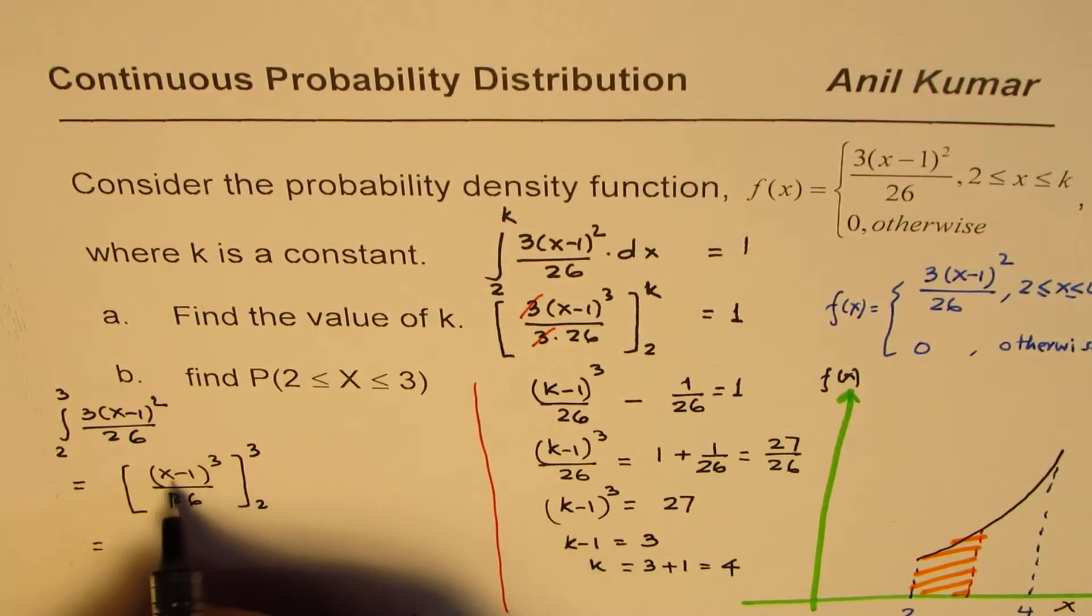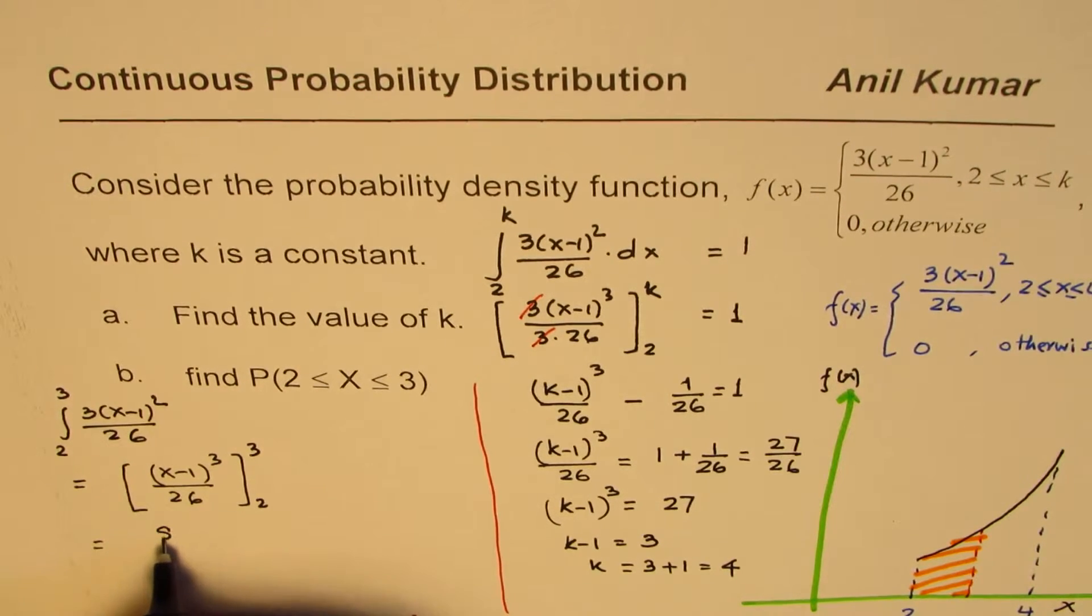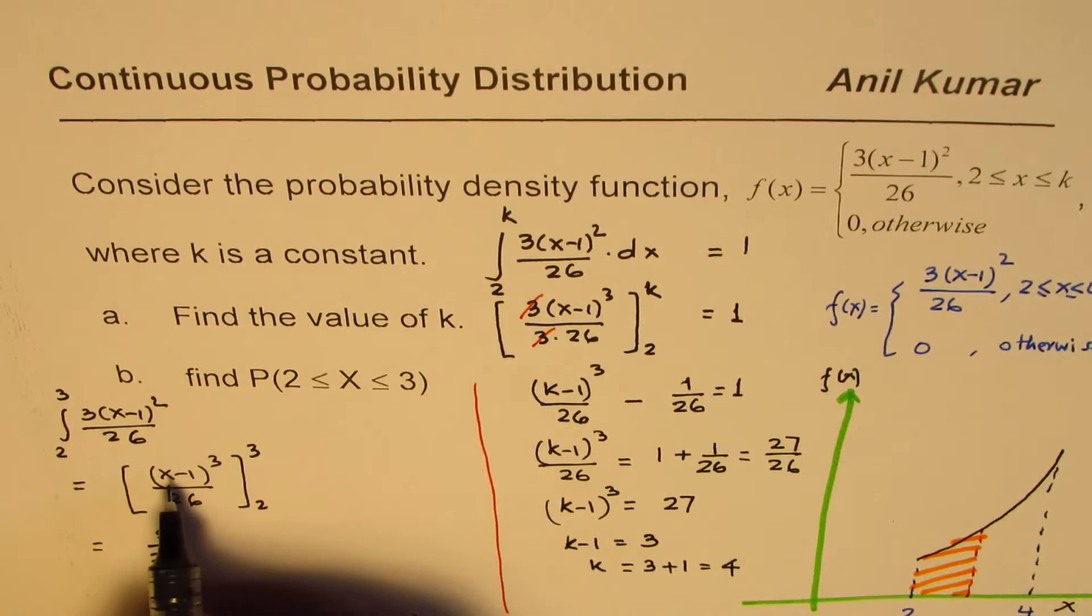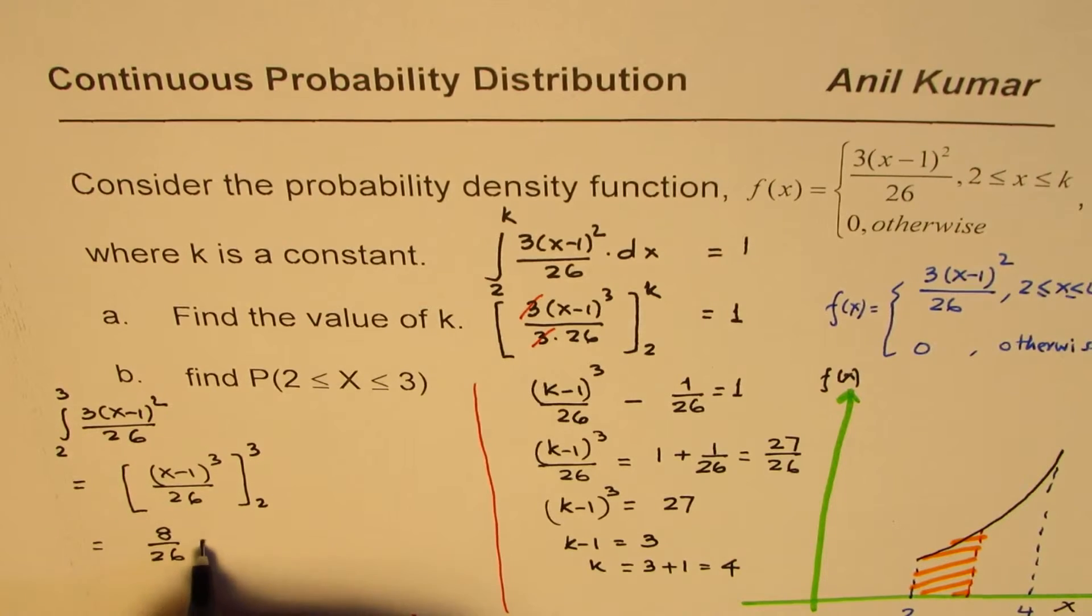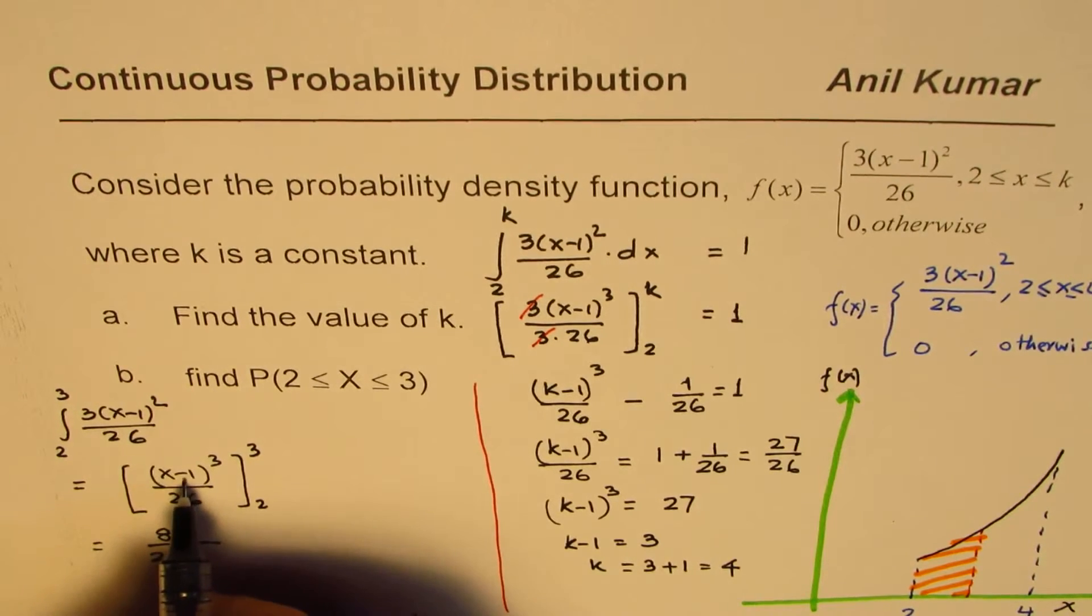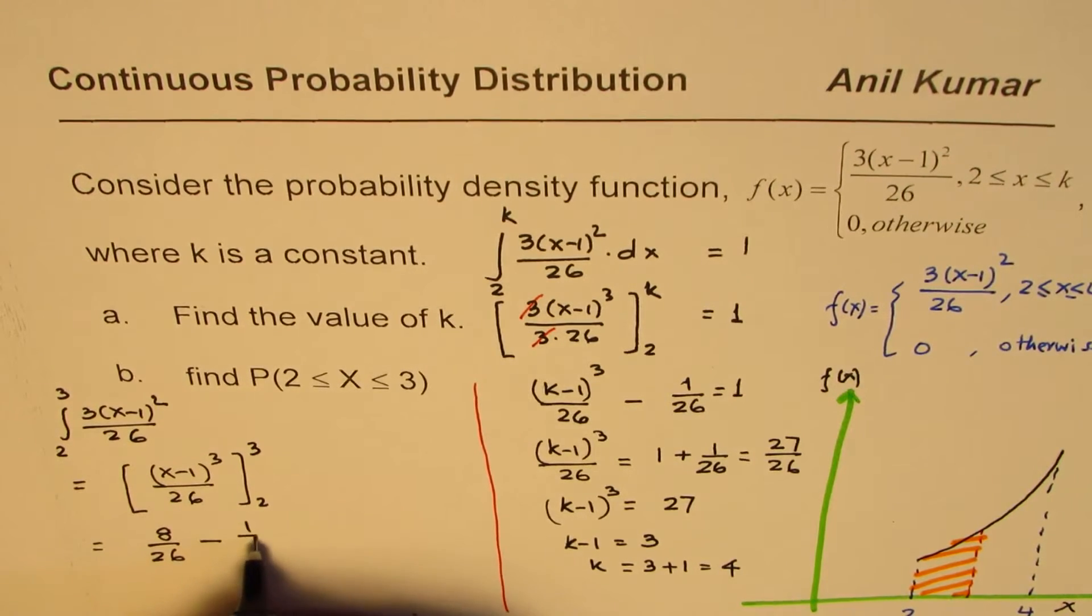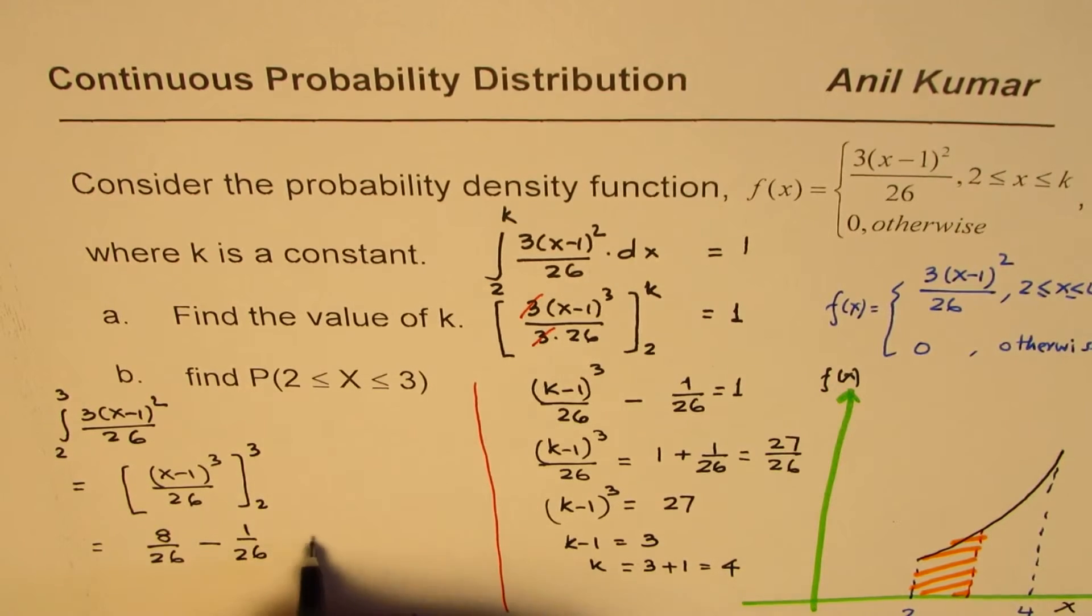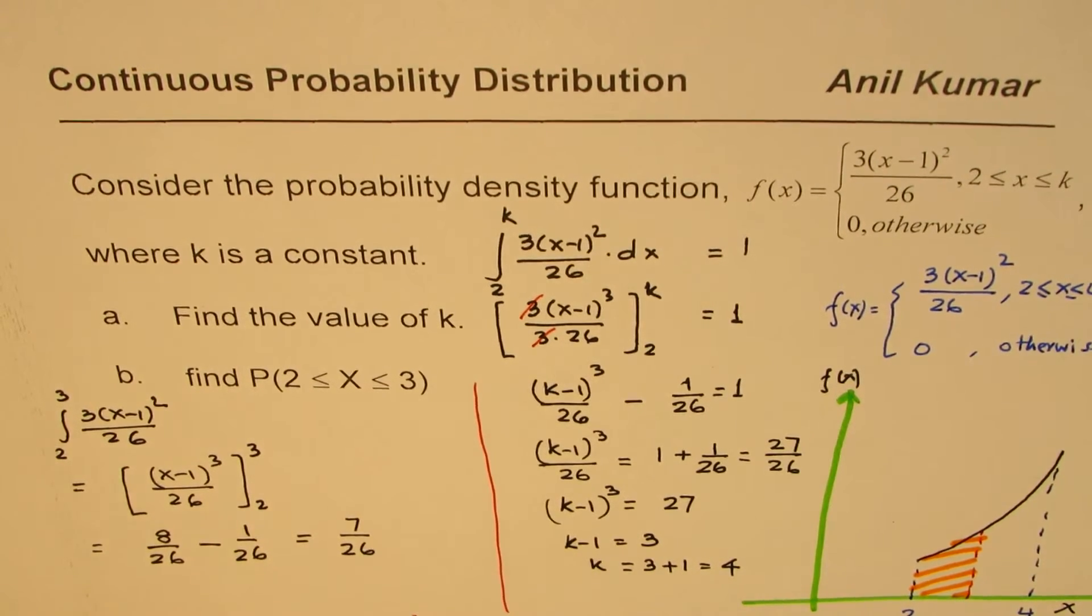So this you could write, when you substitute 3 here, you get 3 minus 1, which is 2, 2 cubed is 8, so you could write 8 over 26. 3 minus 1 is 2, 2 cubed is 8, minus 2 minus 1 is 1, 1 cubed is 1, so you have 1 over 26. And that gives you 7 over 26 as your answer.